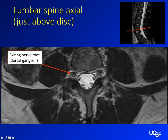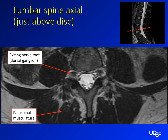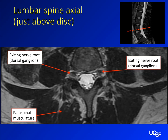Here we have paraspinal musculature — they have names but they're honestly not very important and you can look them up if necessary. Here's the exiting nerve root on the other side. It's worth noting that the nerve root comes out above the disc, so a lot of times you can have a really bad disc and that nerve root at that level can still be relatively safe.